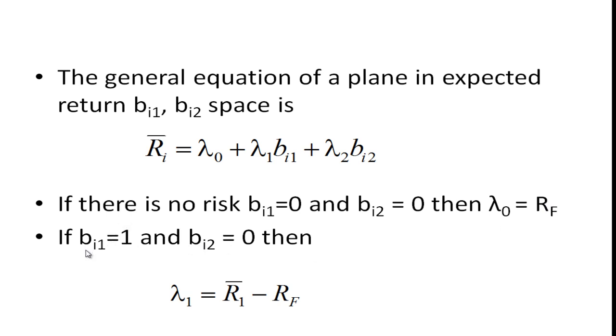And then what you do is if you were to eliminate the second risk factor, make bi2 equal to 0 and bi1 equal to 1, and solve for it, lambda_1 equals r-bar (the expected return of 1) minus the risk-free rate. And you could do that for lambda_2; you get a similar type equation.